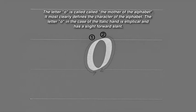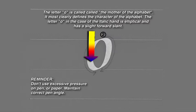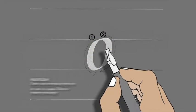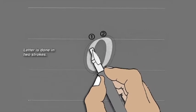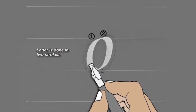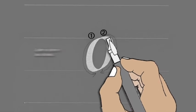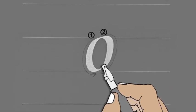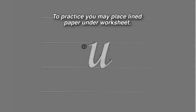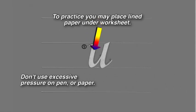The letter O is called the mother of the alphabet. It most clearly defines the character of the alphabet. The letter O, in the case of the italic hand, is elliptical and has a slight forward slant. The letter is done with two strokes. The letter U is done with one stroke. To better understand the space between the lines, it may be helpful to practice with line paper under the worksheet.